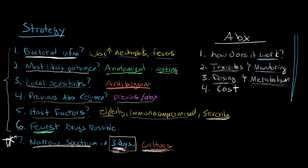It's important to know if your drug is hepatically or renally metabolized, and if so, to make sure you adjust your dose accordingly if your patient has impairment in either. And finally, also very important: the cost of the drug. It doesn't help much to give a patient a very expensive drug they can't afford, because they're not going to take it and it's not going to do them much good.